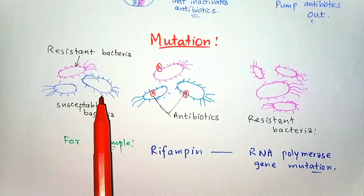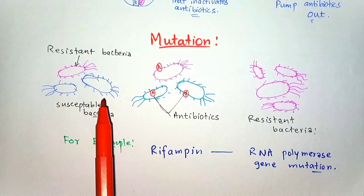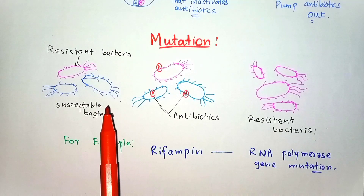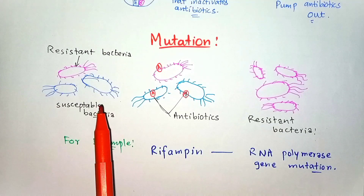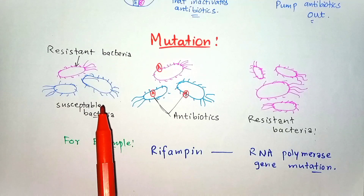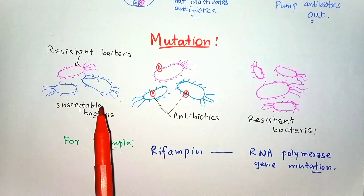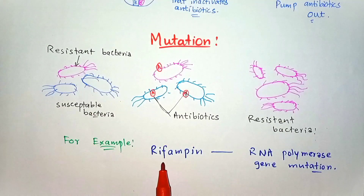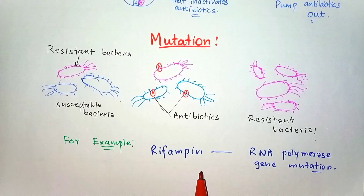Specific genetic mutations are the molecular basis of resistance to specific drugs. For example, in streptomycin there is a ribosomal mutation; in quinolones there is a DNA gyrase gene mutation; and in the important drug rifampin, there is an RNA polymerase gene mutation.